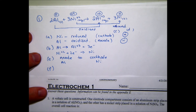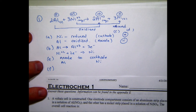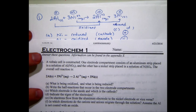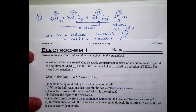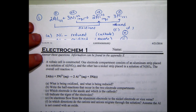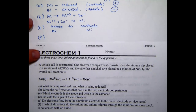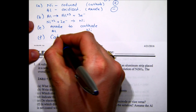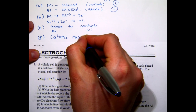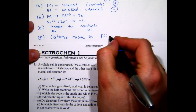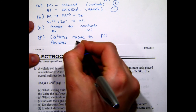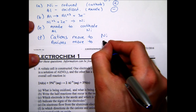For question (f), in which direction do cations and anions migrate through solution? Assuming the aluminum is not coated with an oxide — aluminum will naturally form Al₂O₃ coating it, which is why aluminum generally doesn't rust. Cations always move toward the cathode; anions move toward the anode.